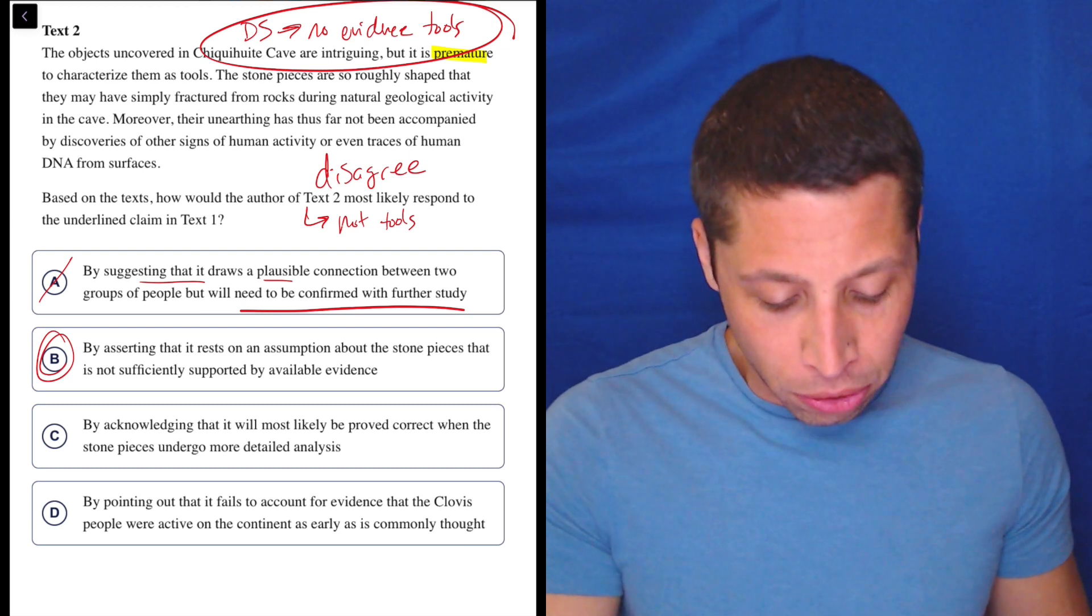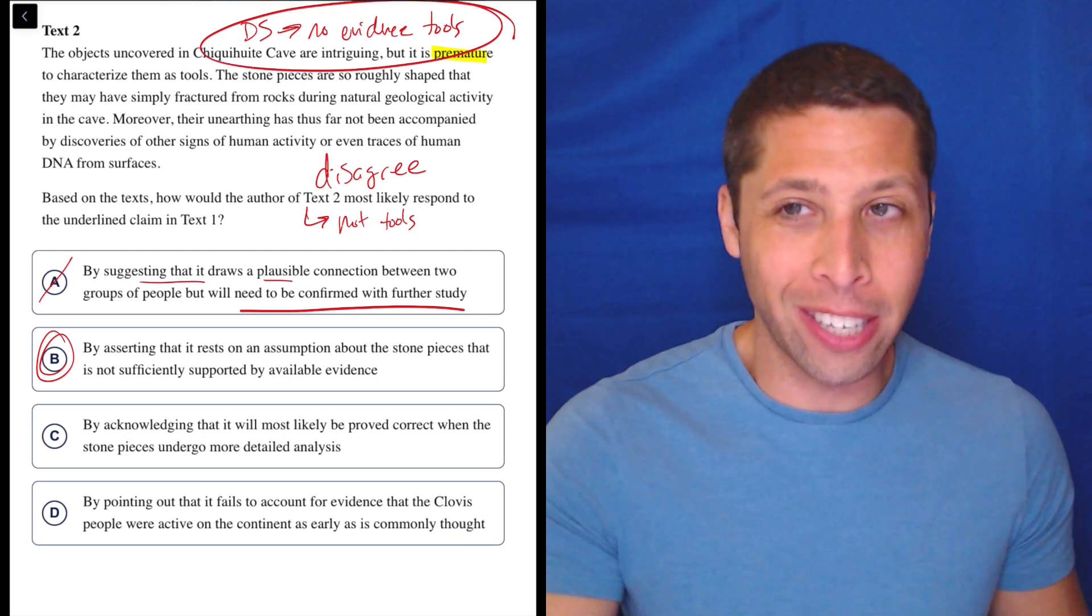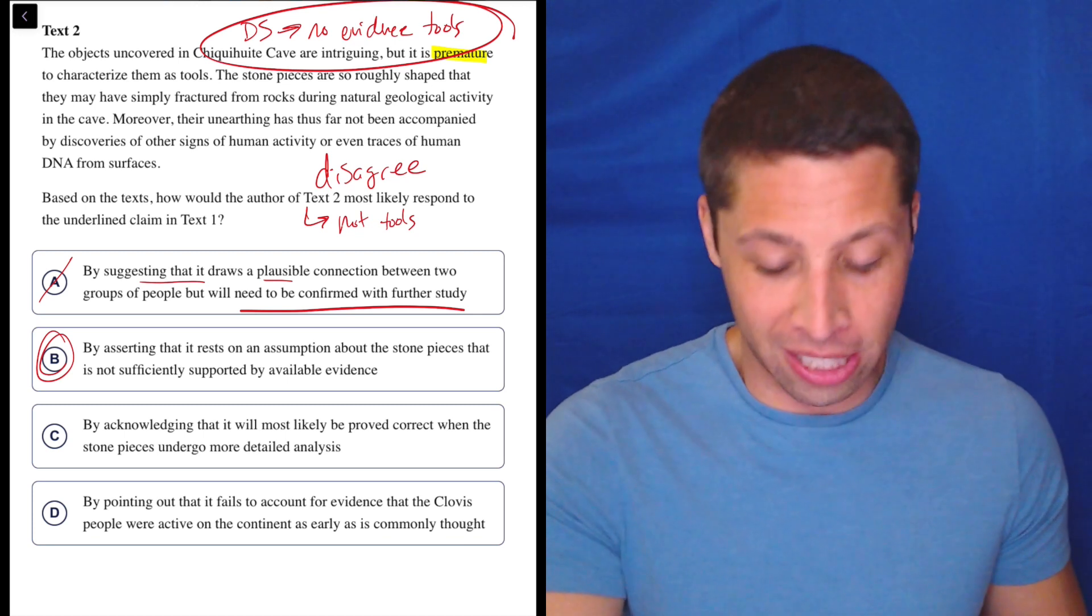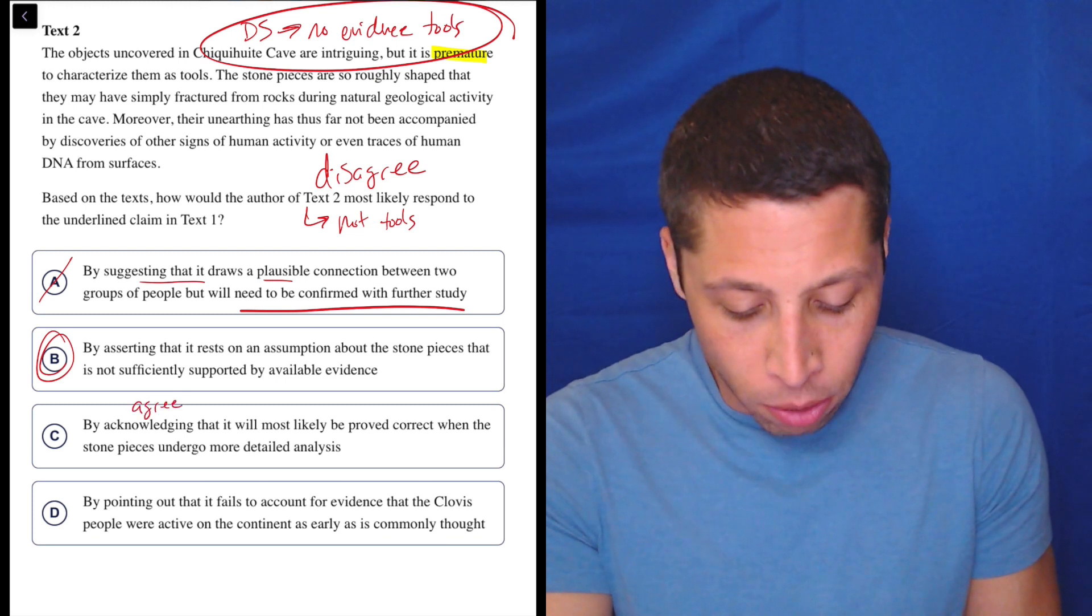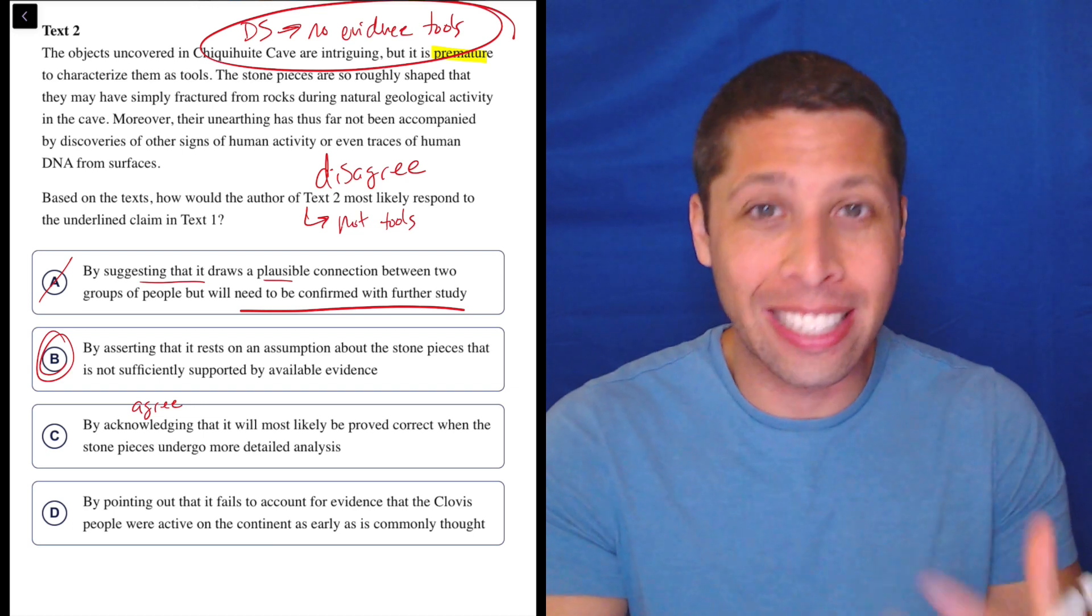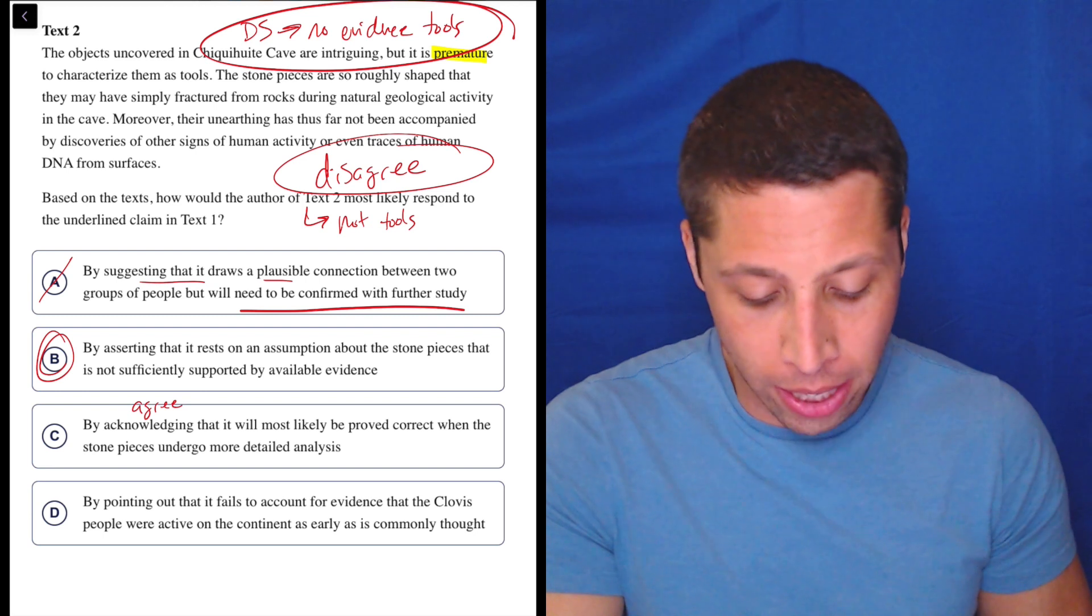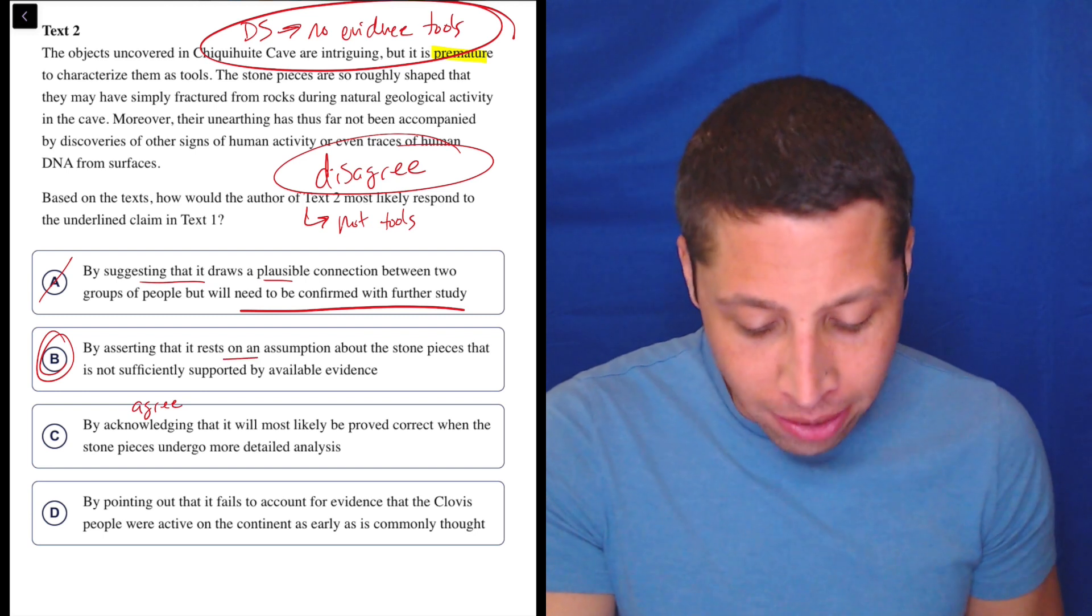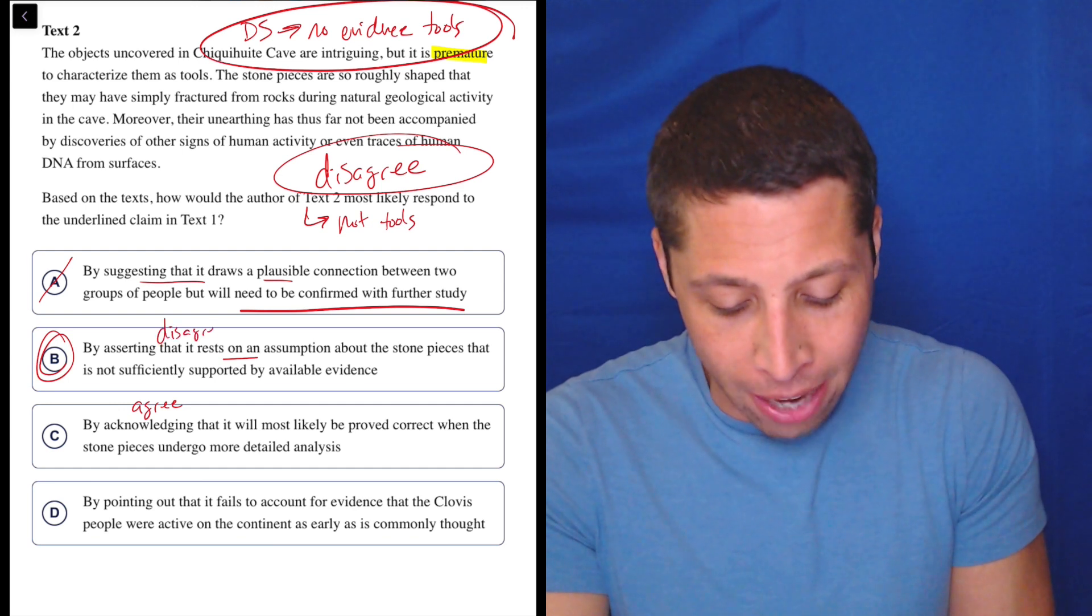By acknowledging that it will most likely be proved correct when the stone pieces undergo more detailed analysis. Again, no, he's saying there's no evidence. He's not saying we need to do more research. The evidence is not there. But again, this sounds like agreement, right? It's agreement with a caveat or an exception, but it's still agreement. But what we want is disagreement, right? So it's on a bad assumption that's not supported by evidence. That sounds like disagreement, right? Dumb it down.